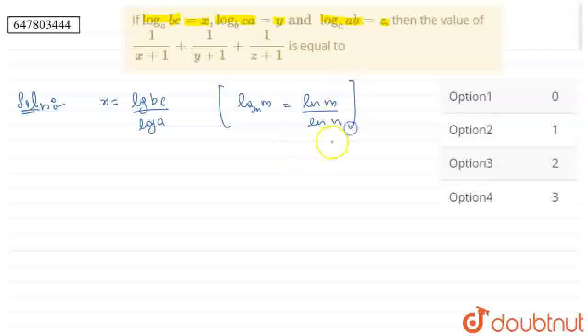I am writing log base e as ln. Natural log, when our base is e, so I'm writing it as ln for natural log.